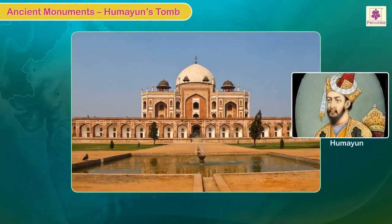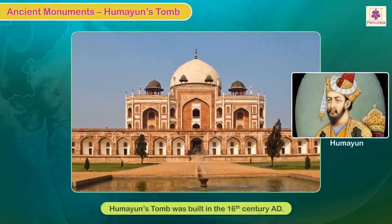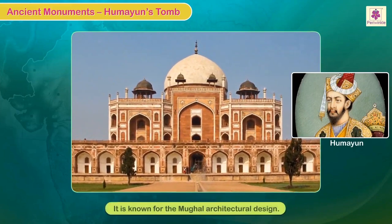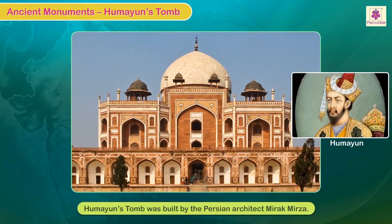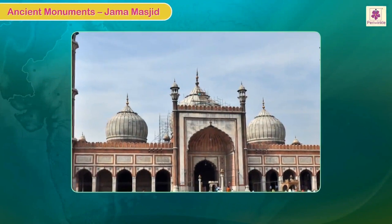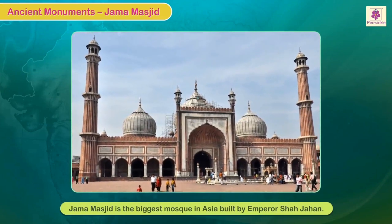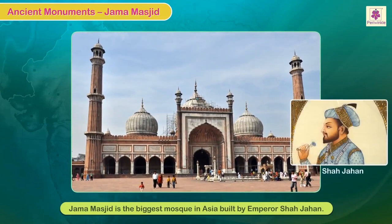Humayun's Tomb was built in the 16th century AD. The tomb is known for its Mughal architectural design, built by the Persian architect Mirak Mirza. The Jama Masjid, built in the 17th century AD by Emperor Shah Jahan, is the biggest mosque in Asia.